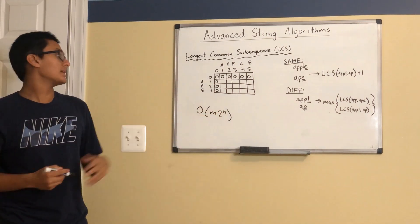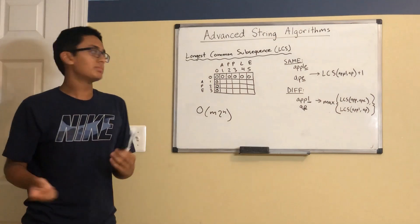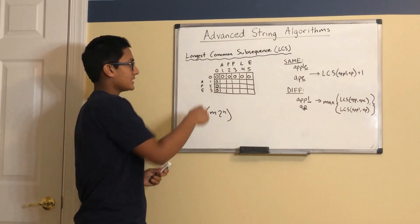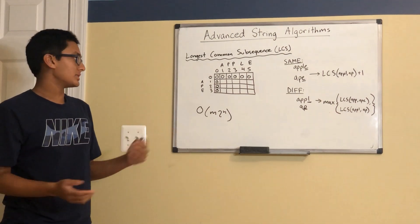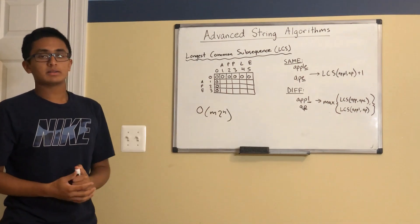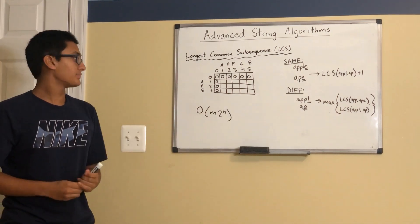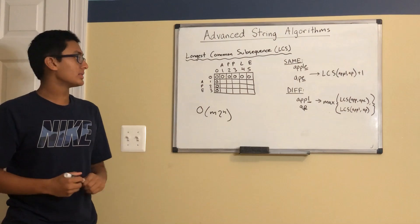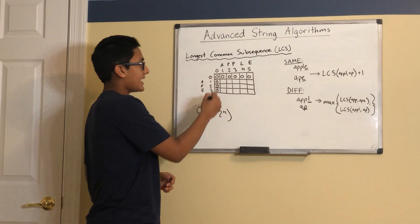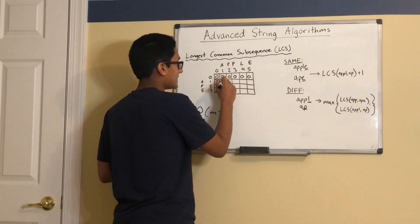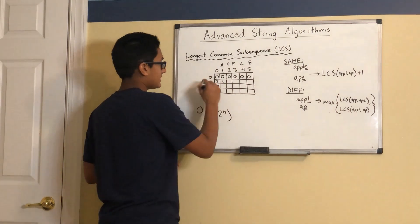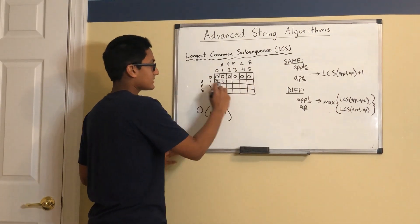This is our dynamic programming recurrence. Our base cases are relatively simple: when the index is 0, we set the value in our DP table equal to 0. After that, we simply apply the previously mentioned dynamic programming formula. Let's quickly run through and fill in this table. We see that A and A are the same, so that is a 1, since 0 plus 1 is 1. Then we can fill out the rest of this row.